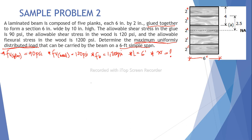Remember the formula for shear stress: fv = VQ over Ib. The maximum shear stress for a rectangular section is 3V over 2bd, and the maximum flexural or bending stress for a rectangular section is 6M over bd².